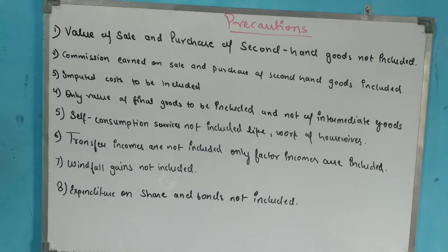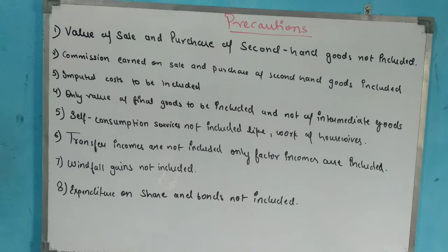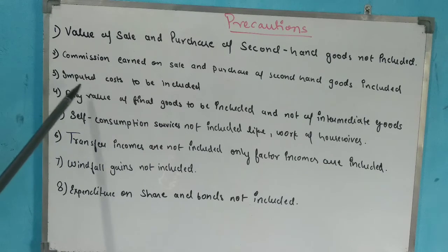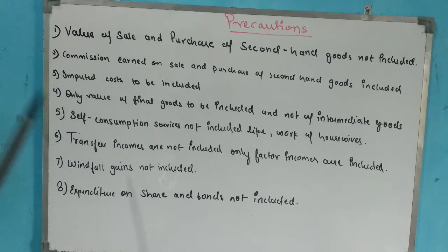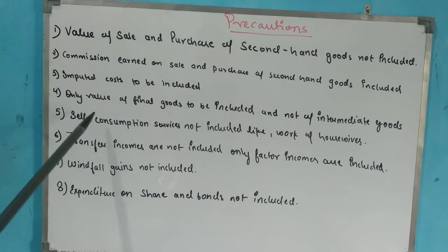Next precaution: imputed costs are to be included. Imputed cost is the cost a producer incurs for themselves — for example, if a producer owns land and produces on it, the imputed rent of that land must be counted in national income calculation. Similarly, if a producer uses their own goods for personal consumption, that also counts as imputed cost.